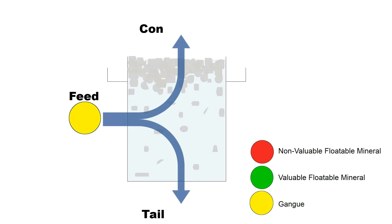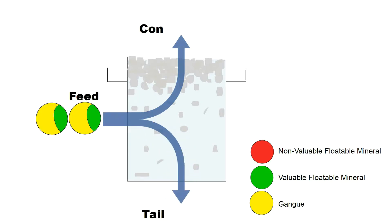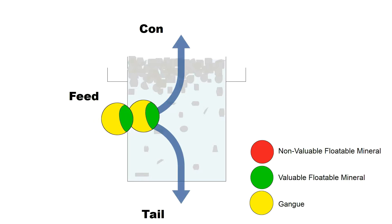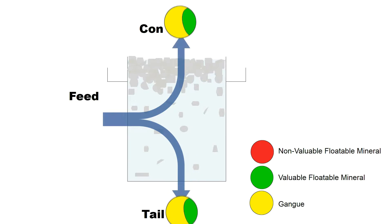However, the gangue mineral will go into the flotation cell, won't attach to a bubble, and will eventually go to the tail. If we have a composite particle, then it has the valuable mineral, and it may or may not go to the concentrate or the tail, depending on the probability of attachment to a bubble — so some will go to the concentrate and some will go to the tail.